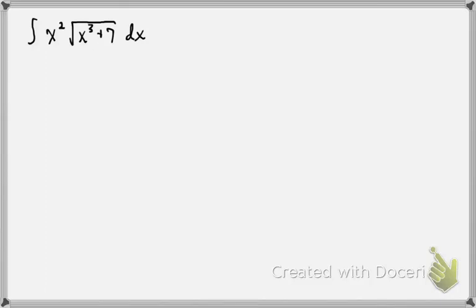We want to do the anti-derivative of x squared times the square root of x cubed plus 7 using the method of u substitution.